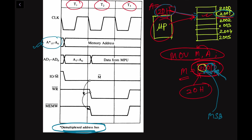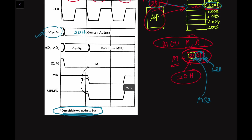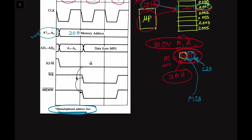The higher order address bits carry the MSB (20H), and the lower order carries the LSB (01H). The 20H is transferred through the higher order address bus. The ALE (Address Latch Enable) signal is high for the first clock cycle and low for the remaining clock cycles. When the ALE signal is high, the multiplexed address-data bus AD7–AD0 acts as an address bus.